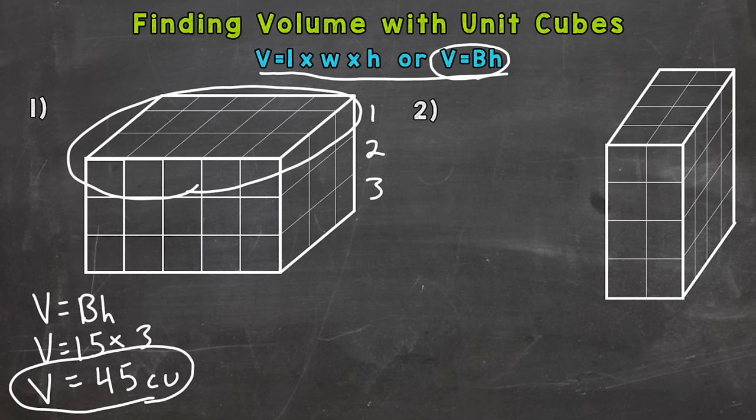Let's use our other formula and see if we get the same answer. Volume equals length times width times height. So length, I consider how far back the three-dimensional object goes. So if we take a look here, how many cubes back? Well, three.